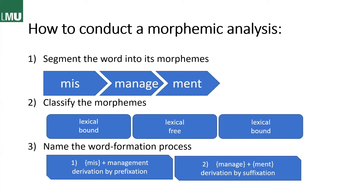If we look back at our word formation processes, that looks a lot like prefixation, because we add a lexical bound morpheme — a prefix — to something free, namely the word 'management.' So we have derivation by prefixation. And our second word formation process, excluding 'mis-' since we've already dealt with it, is the combination of 'manage' and '-ment' — which is another derivation, this time by suffixation, because we add the suffix '-ment' to the lexical free morpheme 'manage' to form 'management.'